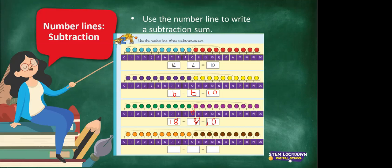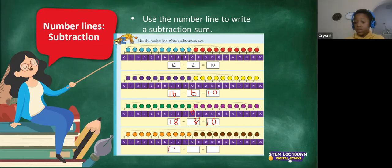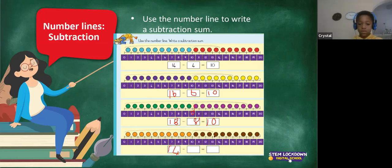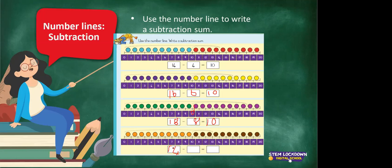This number line helps us — it gives us the answers if we count correctly. We are going to look at this one. We look at the last number. It is 13. And how many are we going to take away? It's 13. We are going to take away 1, 2, and 3. And I land on the answer: 10.